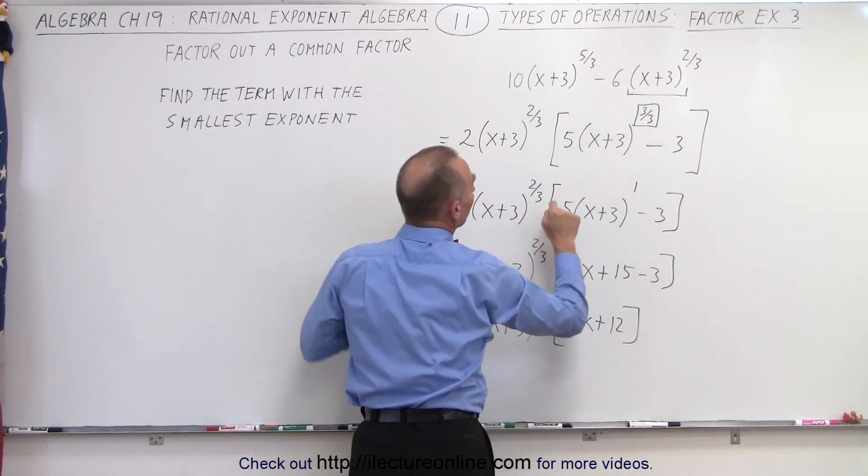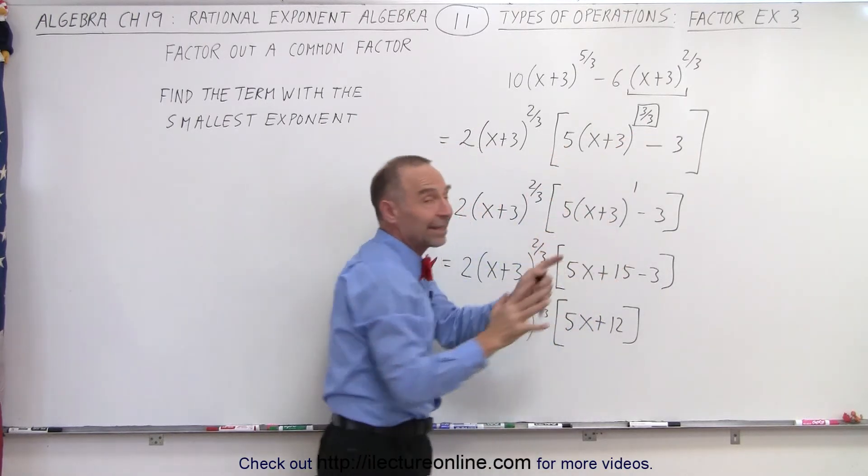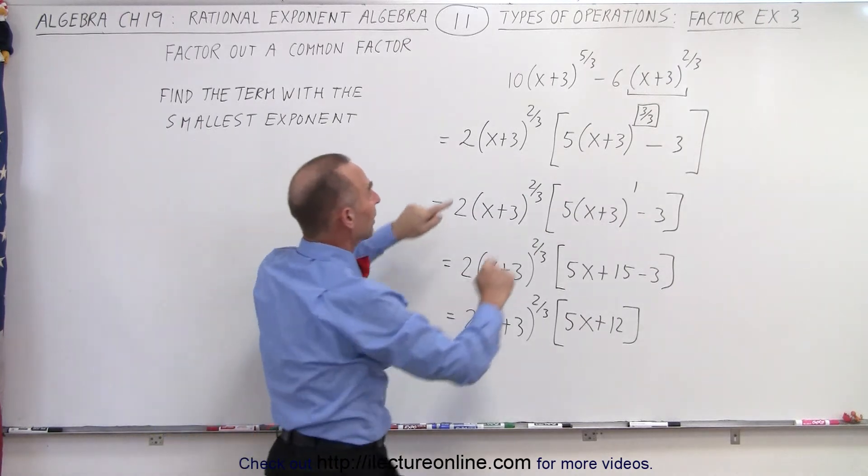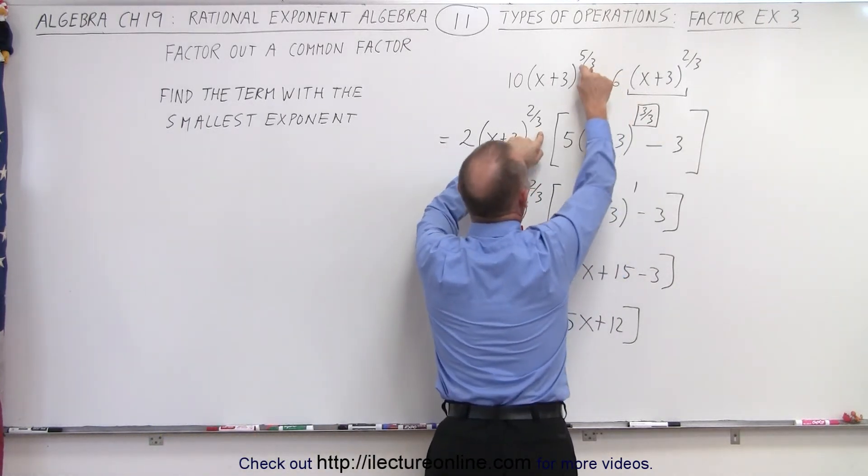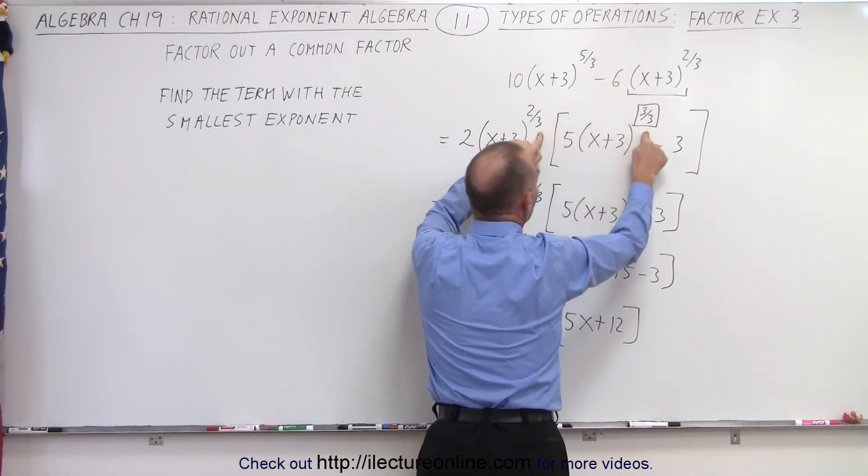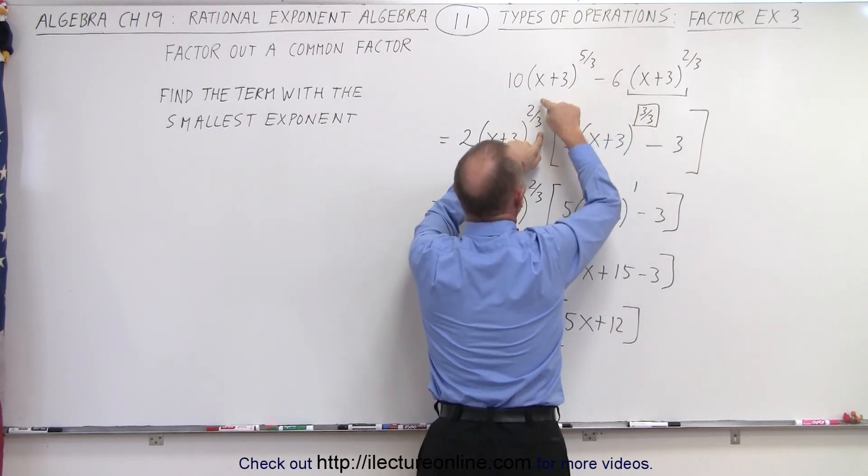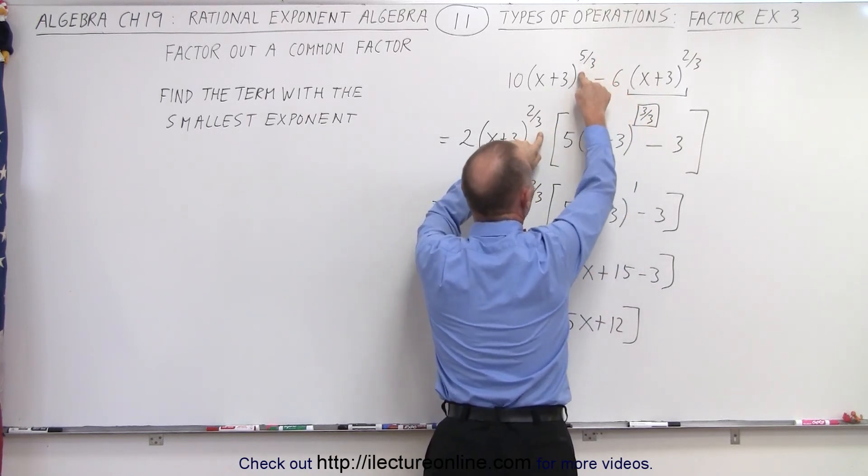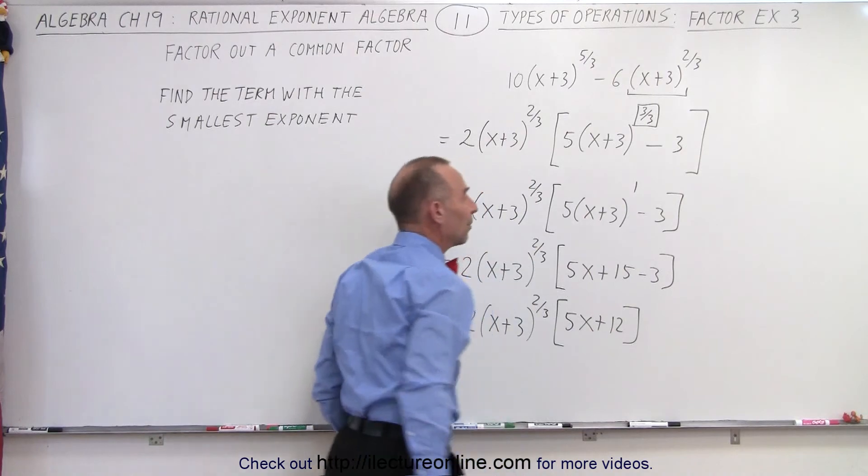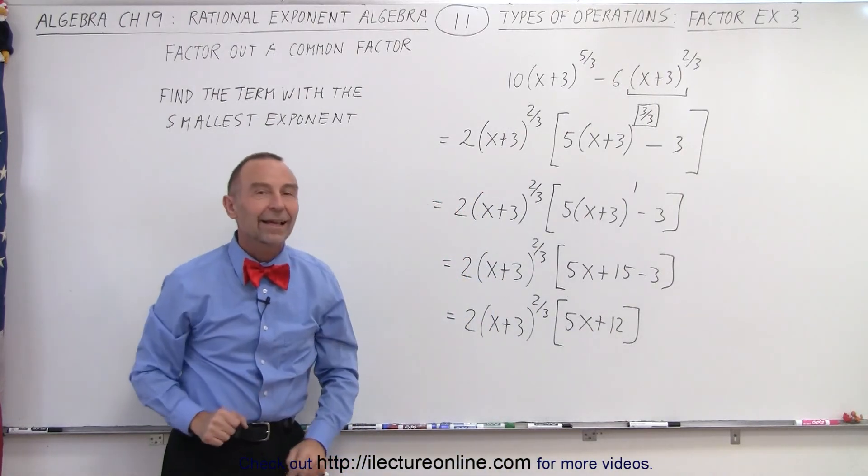What is that unknown exponent? Well, notice when you multiply back in, and that's the key, when you multiply it together again, this should add up to your original exponent. 2/3 plus some unknown should add up to 5/3. 2/3 + 3/3 is indeed 5/3. Of course, 3/3 is the same as 1. And that is how it's done.